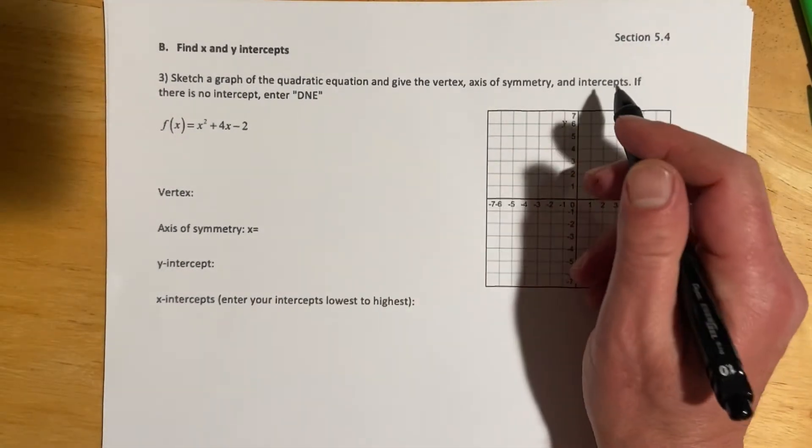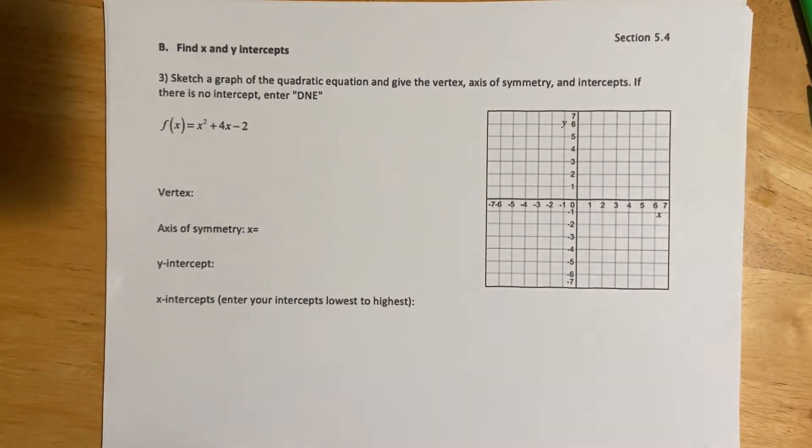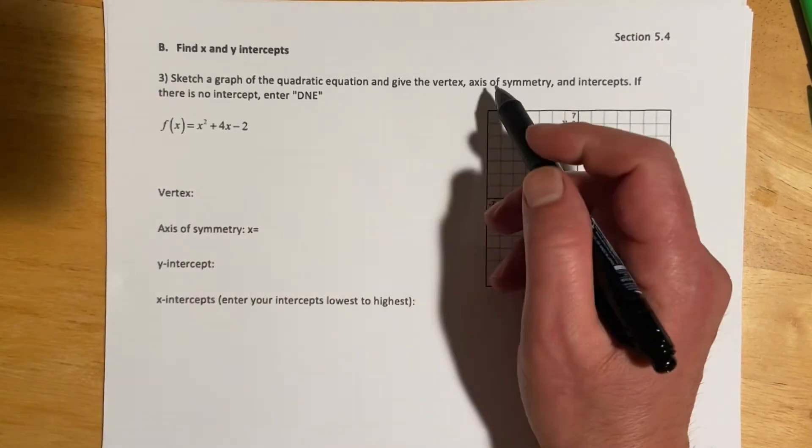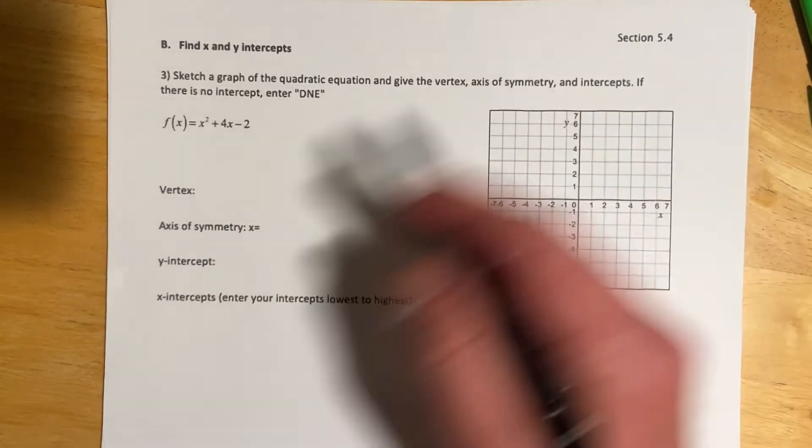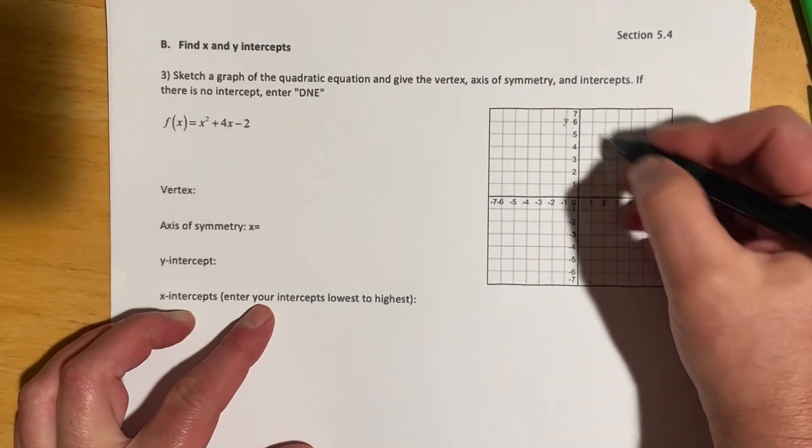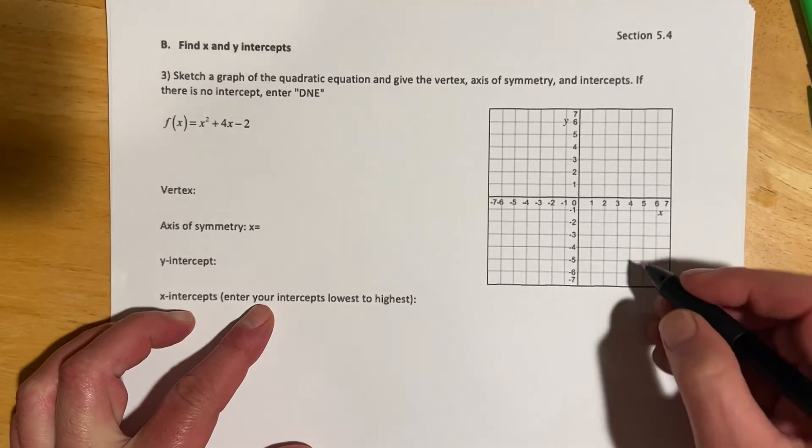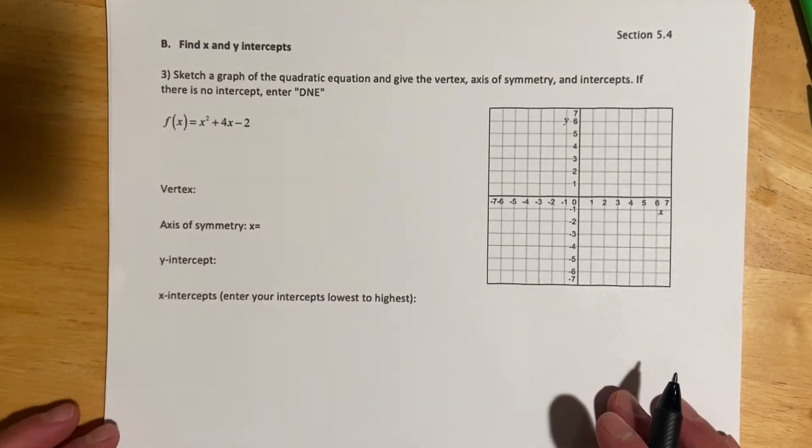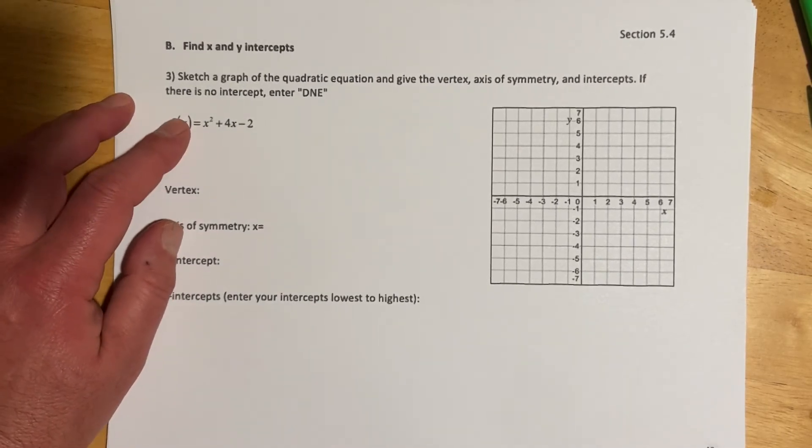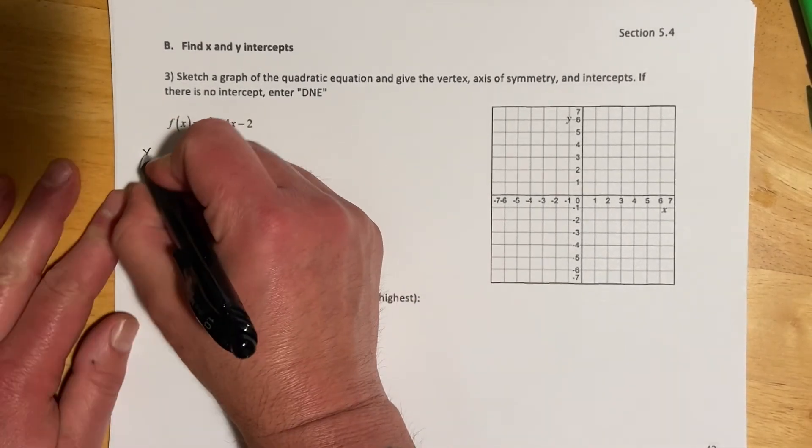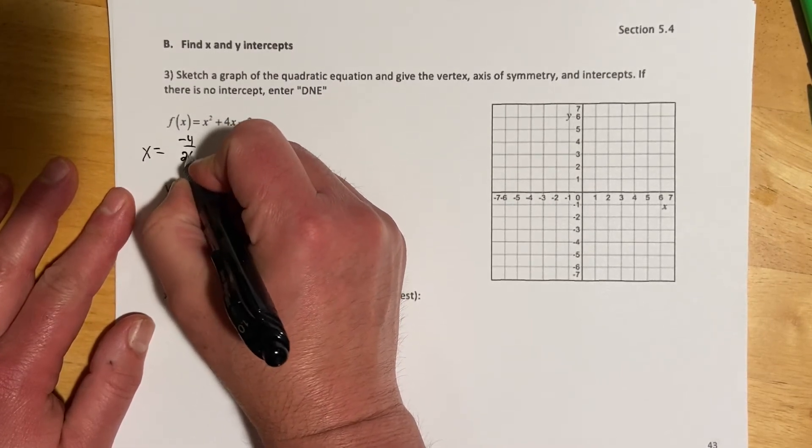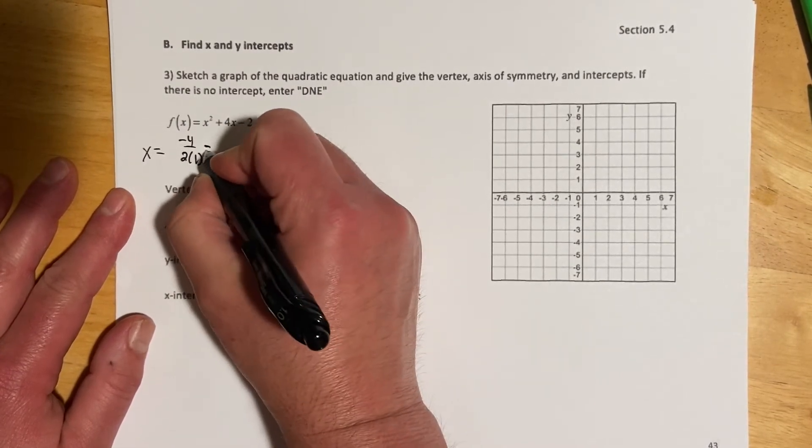Okay, and then these are the problems where we have to find both the x and the y-intercepts. So here we're supposed to sketch a graph of the quadratic and give the vertex axis of symmetry and intercepts. If there are no intercepts, and that can happen right if it's opening up above the axis or opening down below the axis, then enter DNE. So we could do this, you know, we could do negative b over 2a.